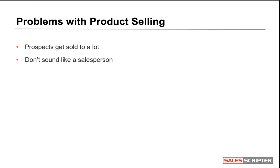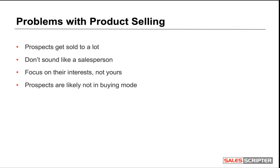In addition, if you agree that it's more optimum to minimize how much you sound like a salesperson trying to sell something, then that will be more difficult with a product selling approach. If you agree that it makes more sense to focus on the prospect and their interests rather than on you, then product selling doesn't comply — it's all about you: this is who I work for, this is what I sell. And if prospects you reach out to during cold prospecting are most likely not in buying mode at that moment, it may not be optimum to always be pushing the product you sell.